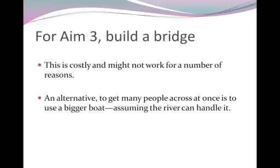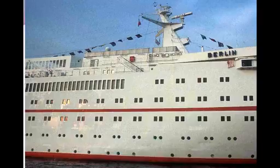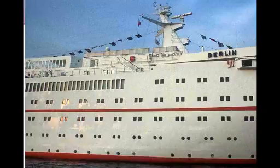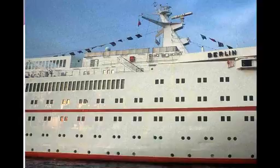An alternative to get many people across at once is to maybe just use a bigger boat, but you might need to know more about the river to make sure it can handle it. For example, if the river is not the Mississippi River, this boat is not going to be able to go across even though it can handle a lot of people. So it has to be feasible. Aim 3 can be more risky, but it has to be feasible and not have a flaw in the logic.